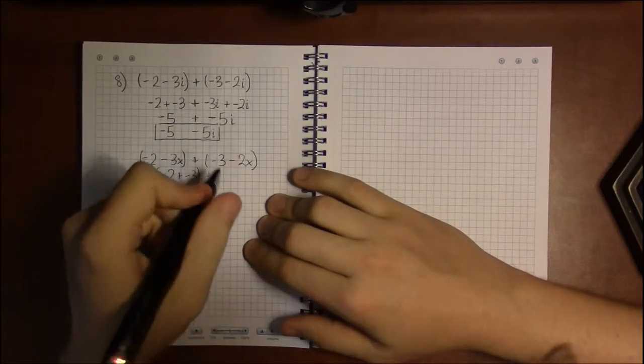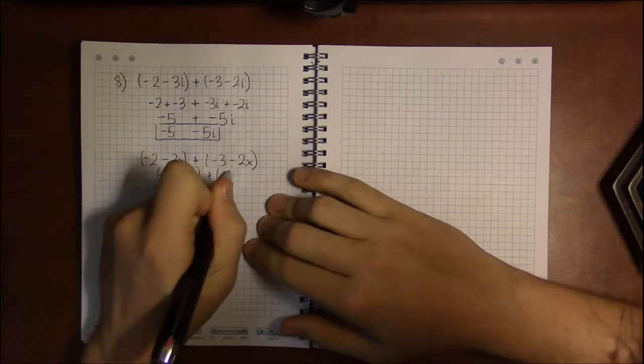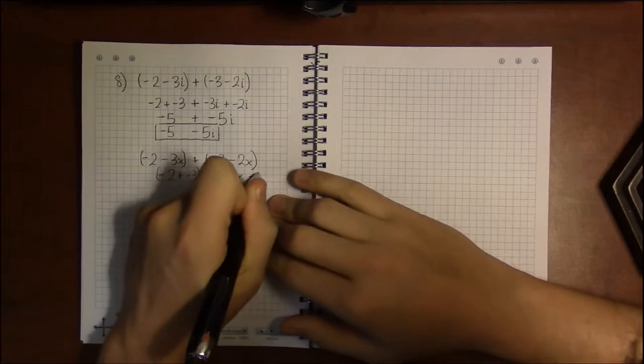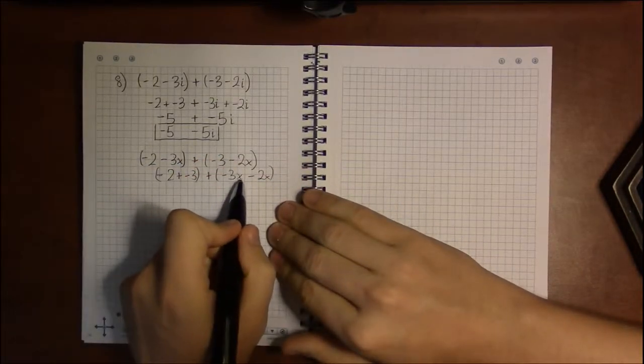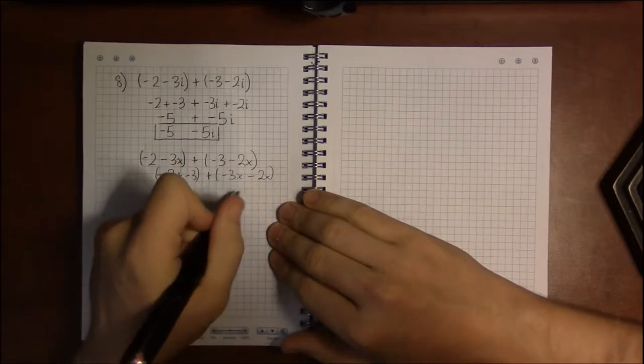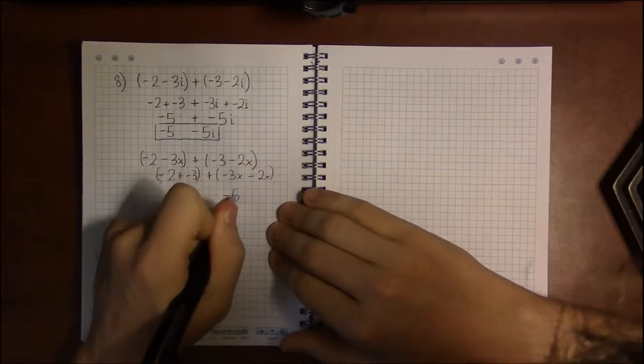And the other pair of like terms are minus 3x and minus 2x. And you compute this as minus 3x plus minus 2x is a minus 5x.